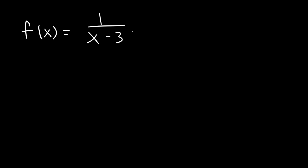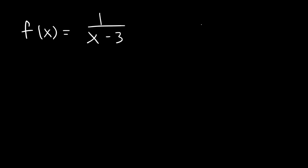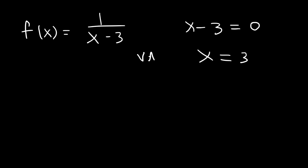A simple way to do this is to set the denominator equal to 0. So if you set x minus 3 equal to 0, and if you add 3 to both sides, you'll see that x is equal to 3. So this is the vertical asymptote.